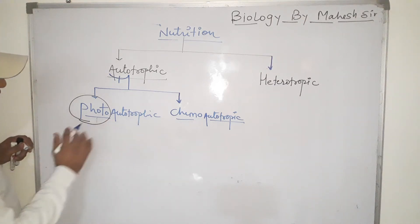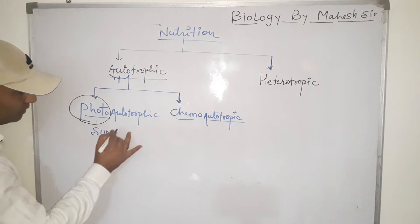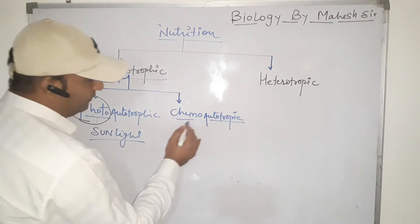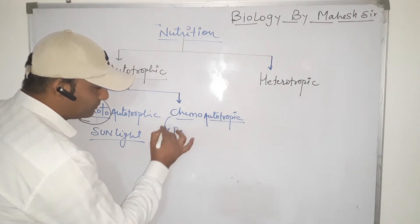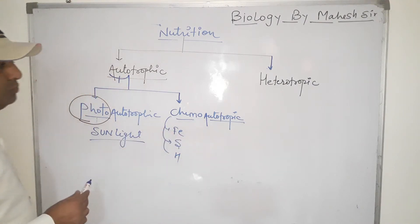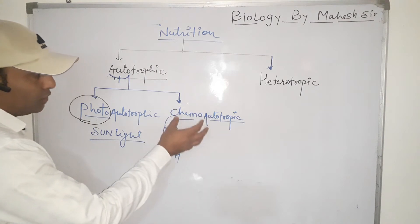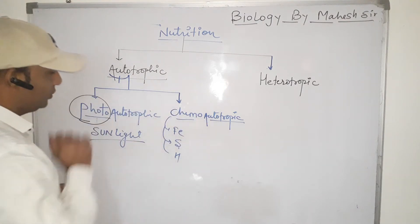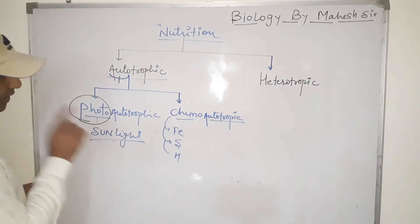Autotrophic nutrition has two types: photo-autotrophic nutrition, in which solar radiation or sunlight is used, and chemo-autotrophic nutrition, in which chemicals are used — such as iron bacteria, sulfur, and hydrogen. Chemo-autotrophic nutrition means the type of nutrition in which an organism produces food with the help of chemicals, while photo-autotrophic means they use sunlight for the production of food.